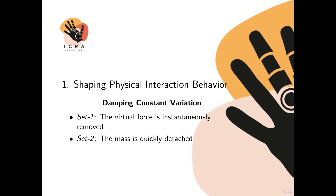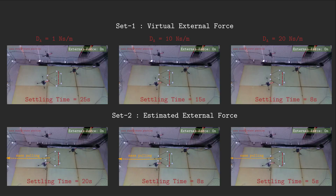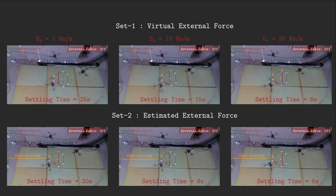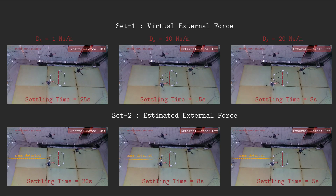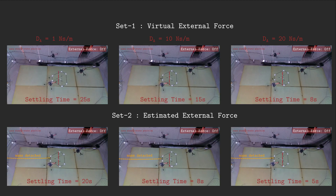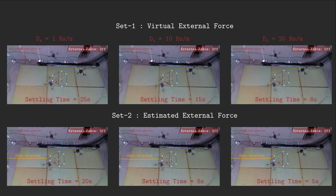The second set of comparisons shows the effect of damping constant variation to assess the platform behavior in the transient phase. The virtual force in the first case and the mass in the second case are quickly removed. From the results, two main patterns can be extrapolated: the ideal mass-spring-damper system is better emulated during the discharging phase rather than the charging phase, due to stick-slip effects and friction in the pulley-cable system.